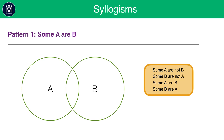From the statement 'some A are B,' the question will ask you to place 'yes' if a conclusion follows and 'no' if it does not. From this statement, we can safely assume that some A are not B — represented by the part of A with no overlap with B. By the same logic, some B are not A. We also know that some A are B and some B are A, both represented by the overlap between A and B.